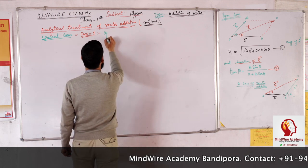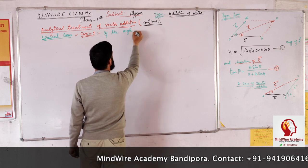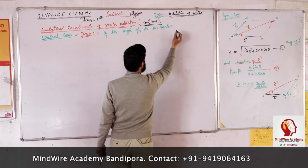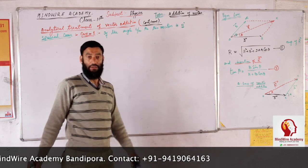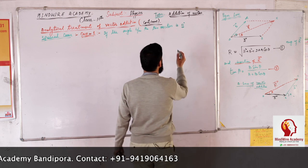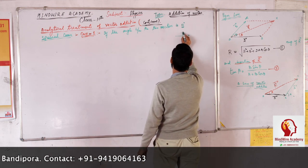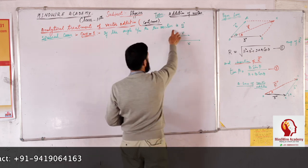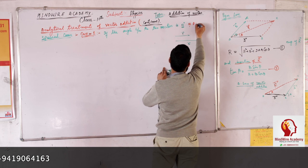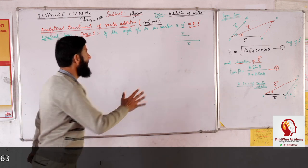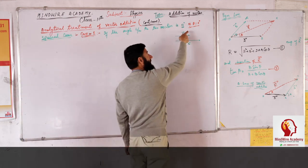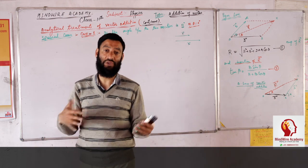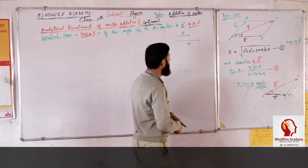Case one: if the angle between the two vectors is 0 degrees, that means the two vectors are simply parallel to each other. If this is vector A and this is vector B, since the two vectors are parallel to each other, the angle between them is 0. So theta equals 0 degrees. Now, what will be the resultant of the addition of these two vectors A and B? We will take the help of the two formulas to find the magnitude and direction.